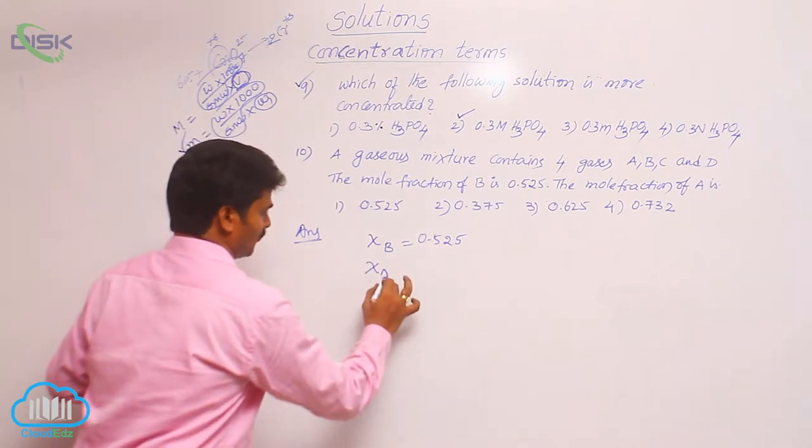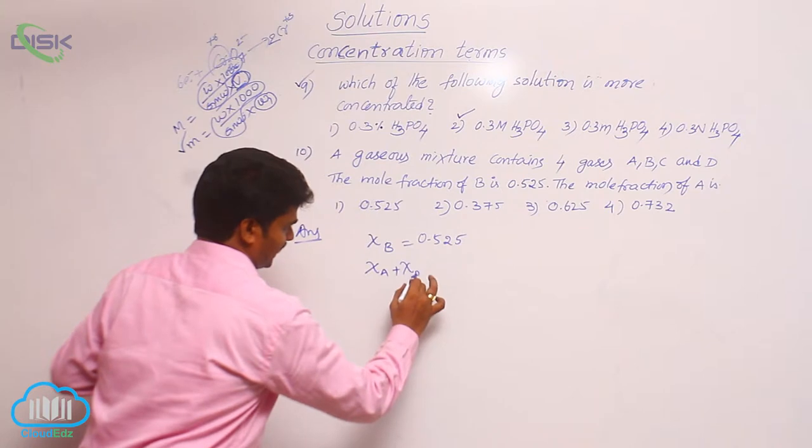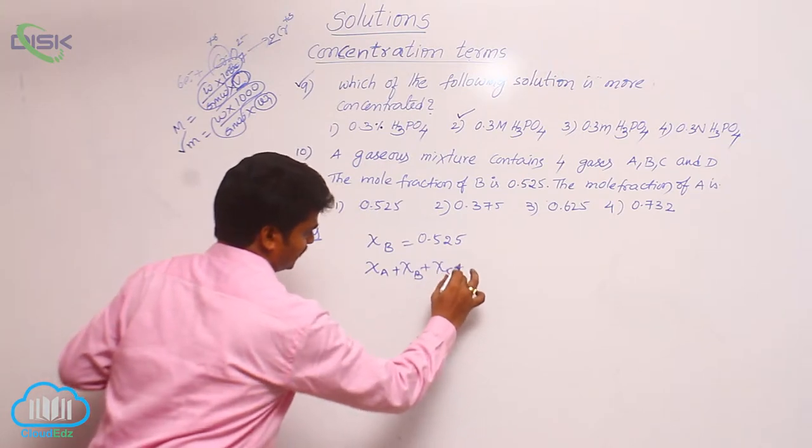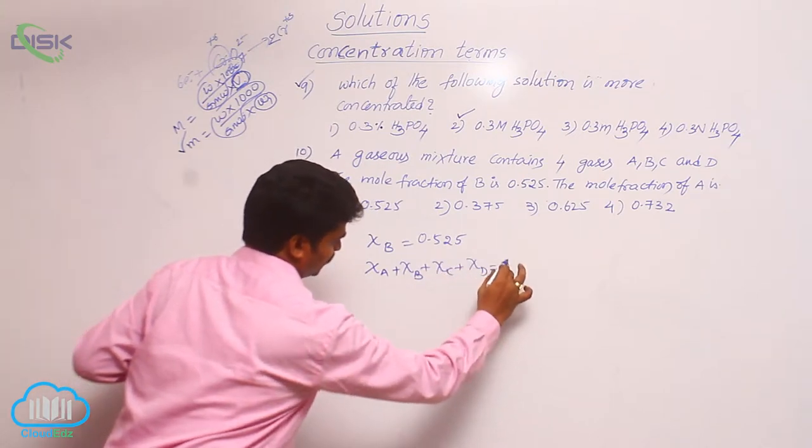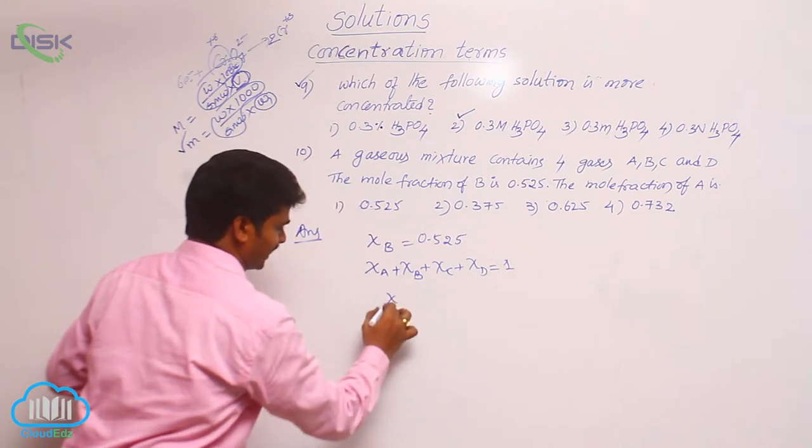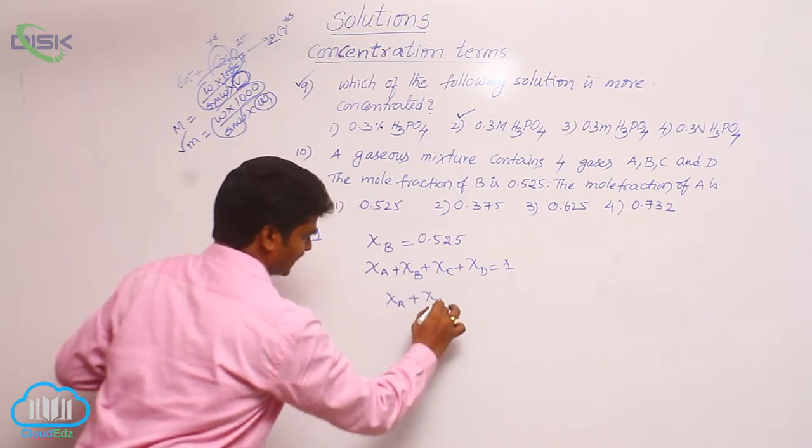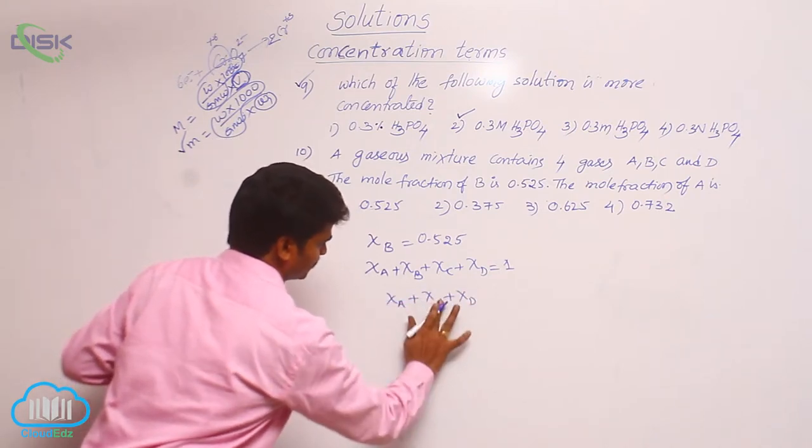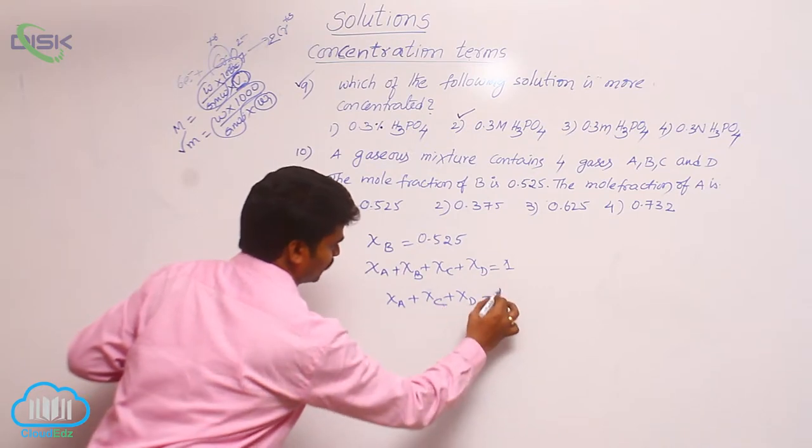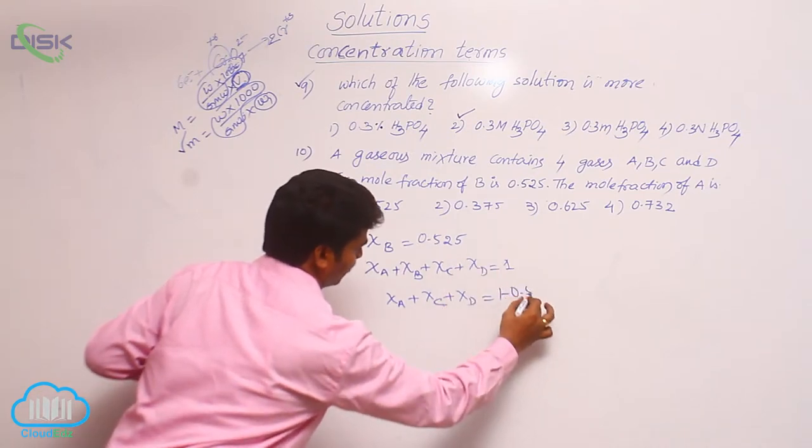Then sum of mole fractions x_A plus x_B plus x_C plus x_D is equal to 1. Already x_B is given. That means x_A plus x_C plus x_D equal to 1 minus this 0.525.